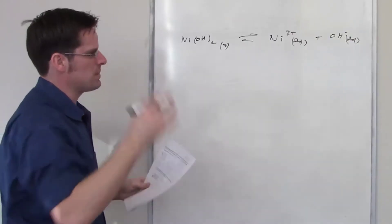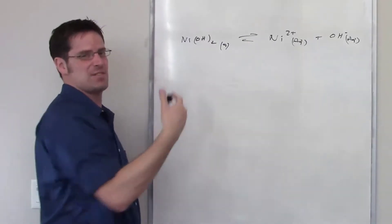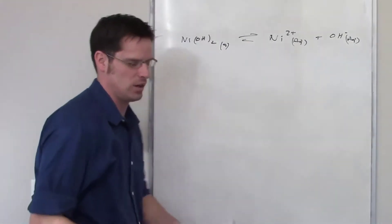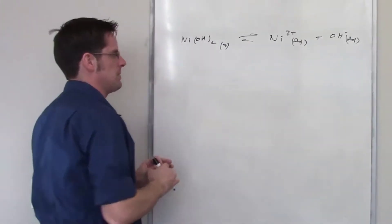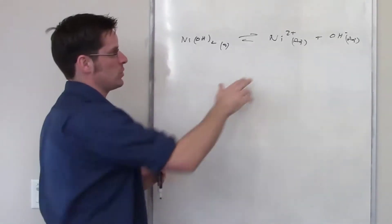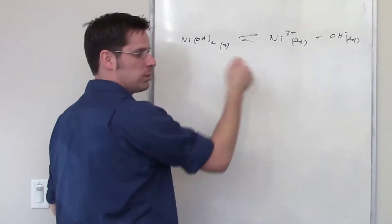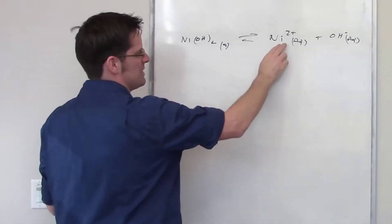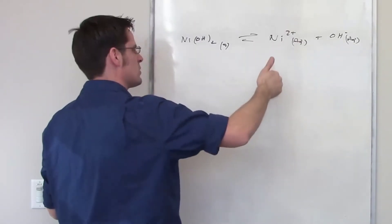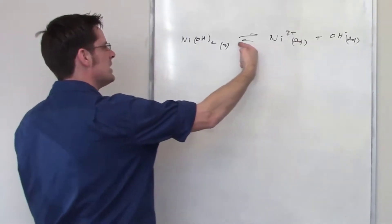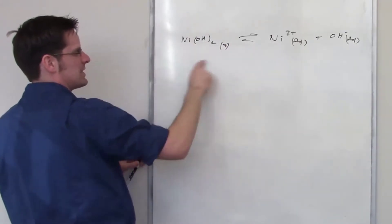It then asks me what the amount of nickel 2 plus is that I have to add in order to get precipitation to occur. Here's what that means conceptually. If I'm adding a separate source of nickel 2 plus, I start throwing nickel 2 plus into this solution, I'm going to be jacking up the concentration of this. As that concentration rises, it's going to push the equilibrium back towards nickel hydroxide solid.